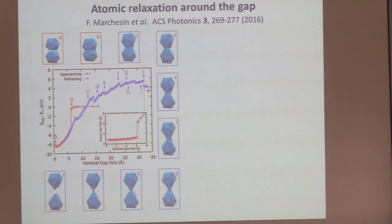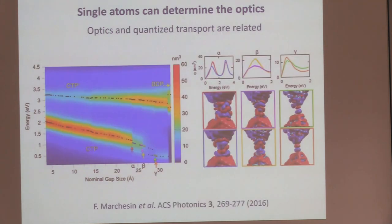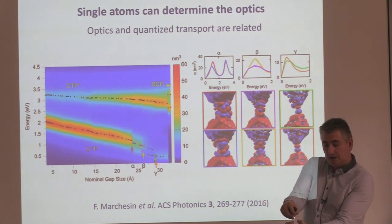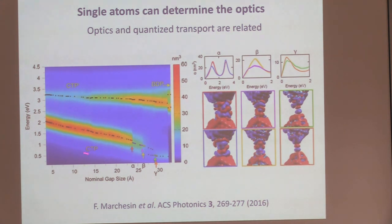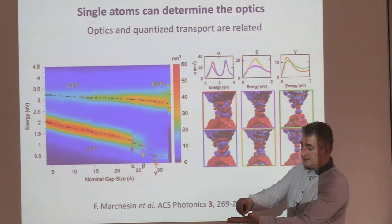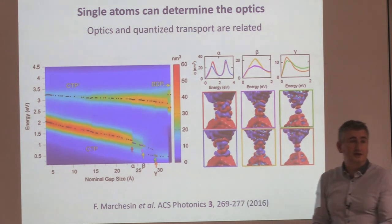We also did junction relaxation calculations. When you clamp the junction and stretch it little by little, in the optics you see jumps in intensity and resonance shifts — connected also with electronic conductance channels forming. You are stretching and creating these conductance channels that are reflected in the optics. This experiment hasn't been done yet, but it would be very interesting to simultaneously measure conductance and the spectroscopy to detect these jumps in the conductance optically.